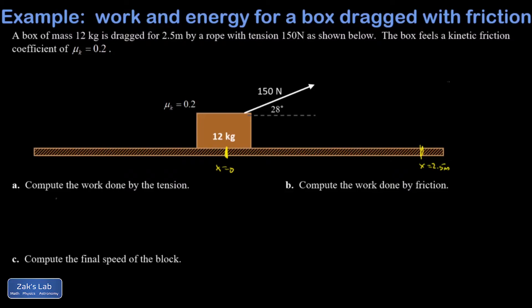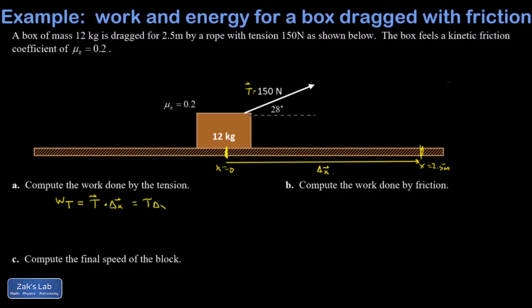First I want the work done by the tension. If I call this tension force T vector, I have to get a dot product between the tension and the displacement vector. The displacement vector points to the right from the initial position to the final position. That would be T Δx cosine θ, but it's often more convenient to think of it as T cosine θ — the parallel component of T — multiplying the entire displacement. It's only the parallel component of the force that's actually pumping energy into the object.